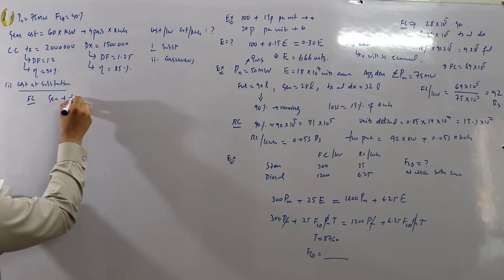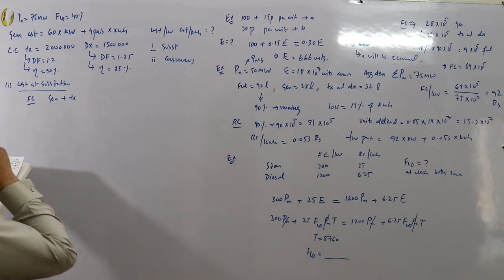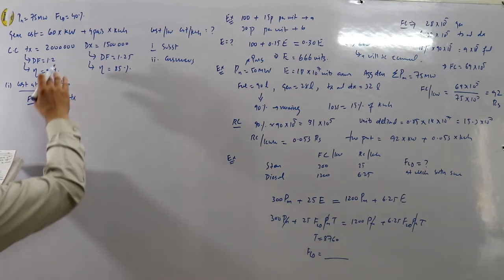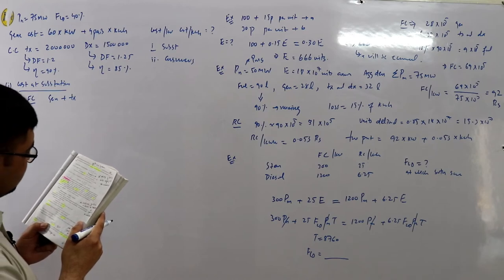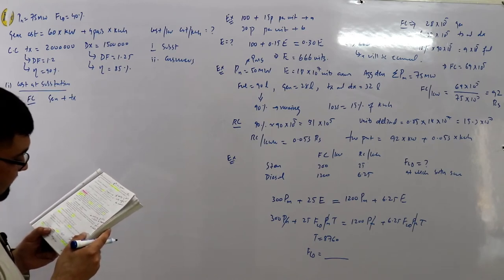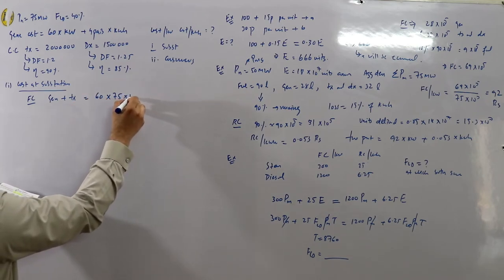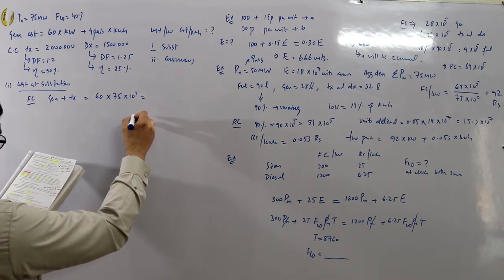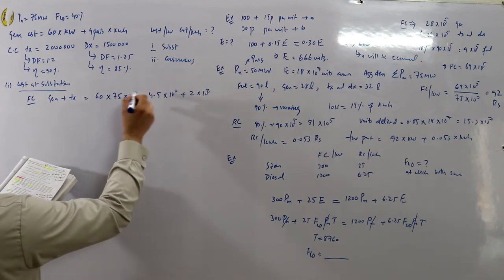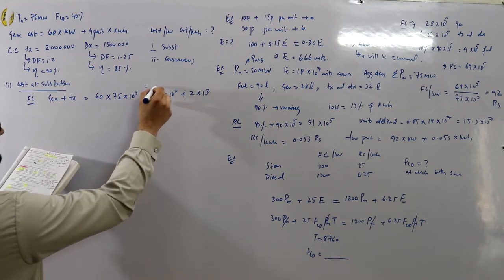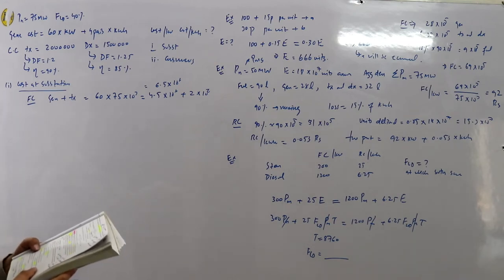At the substation: fixed charges include generation cost plus transmission cost. Generation cost = 60 × 75 × 10³ = 4.5 × 10⁶ rupees. Add transmission cost of 2 × 10⁶. Total fixed charges at substation = 6.5 × 10⁶ rupees.